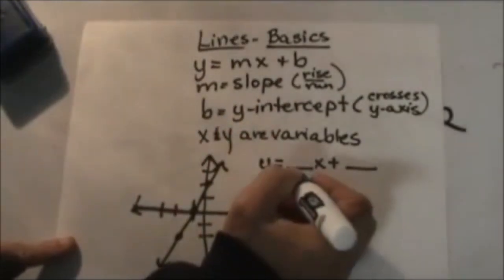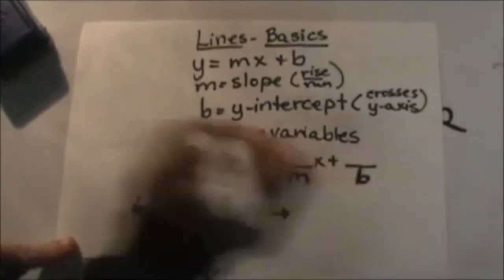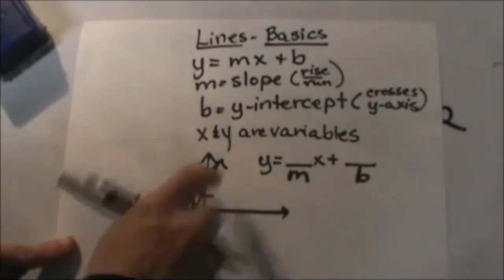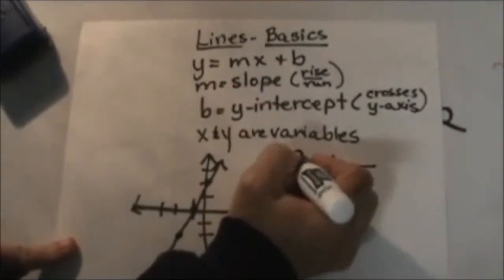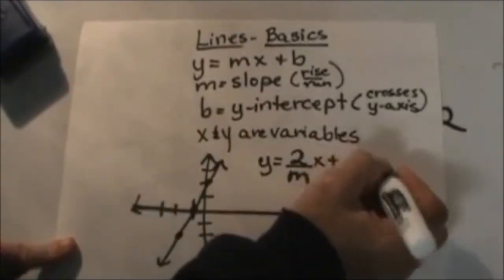You're going to plug in here your m for slope, and here your b for your y intercept. So looking at this example, you go up 2 over 1, so the slope is 2 over 1, or just 2, and your y intercept is a positive 2. So that's how you would define that line. Thank you.